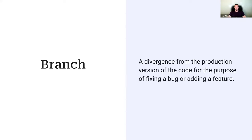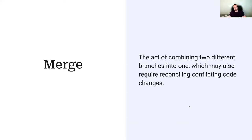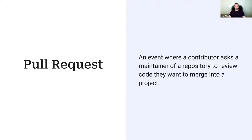Branches allow you to create a divergence from the production version of the code. They're usually created so you can work on a new feature or fix a particular bug. You create the branch, do your work, and when it's done you merge it back into the production code. Merging is the act of combining two different branches into a single branch, which may also require reconciling conflicting changes — if two people touch the same line of the same file, you'll have a merge conflict.